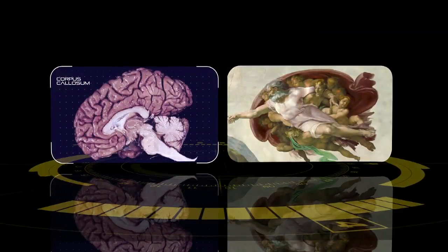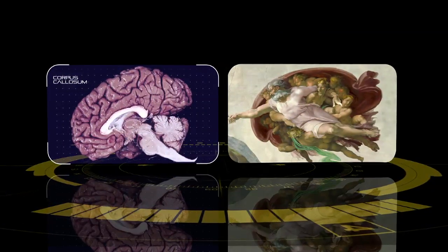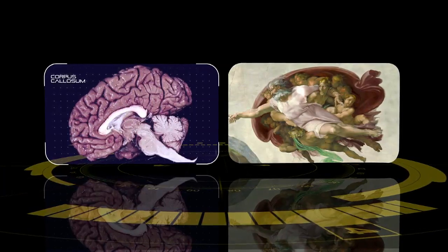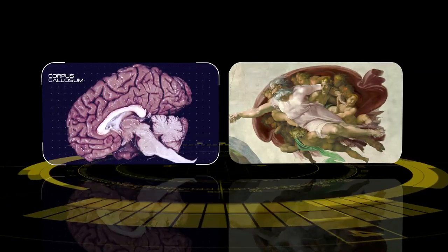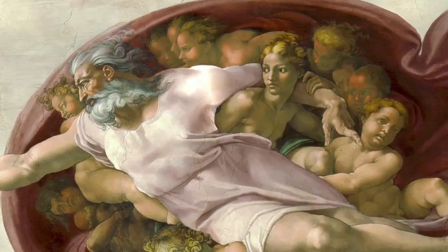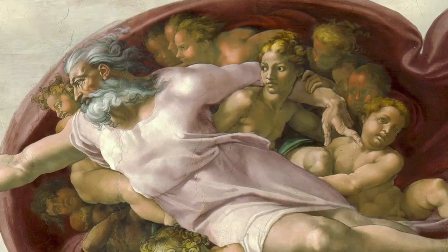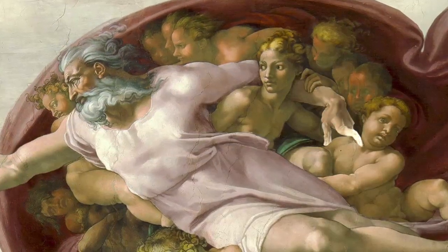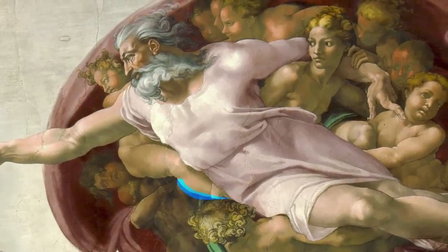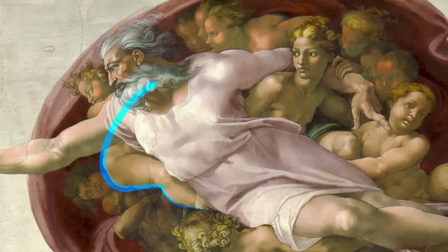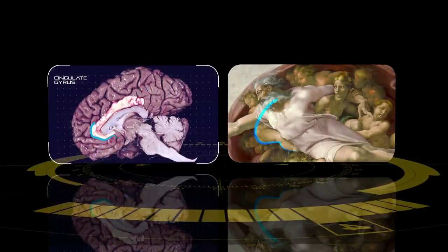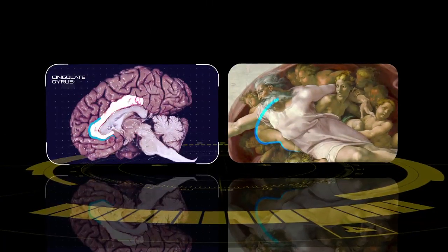The sweep of God's left arm corresponds to the shape and location of the corpus callosum. The eye line and mouth of Sophia continue the line and reinforce the correspondence. The right leg of the cherubim behind God's right shoulder is similar in shape and location to the front of the singular gyrus.